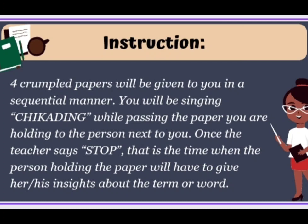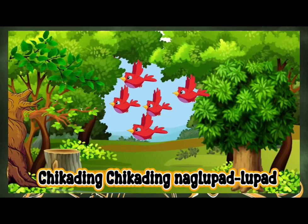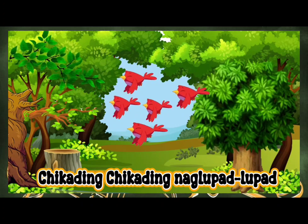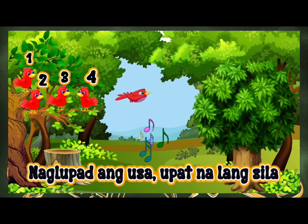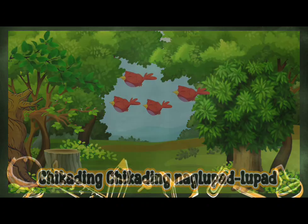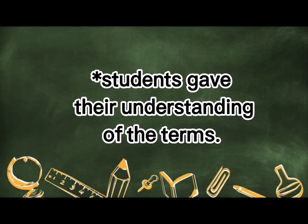Alright, to begin with, you will be given four crumpled papers in a sequential manner. You will be singing 'Chikading' while passing the paper you are holding to the person next to you. Once the teacher says stop, the person holding the paper will have to give their insights about the term or word written there. Is the instruction clear to you, class? Let's begin. Stop! For those who have the crumpled papers, please discuss briefly those words written in there. Thank you so much, class, for your participation.